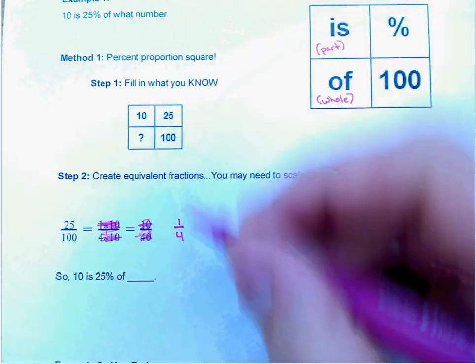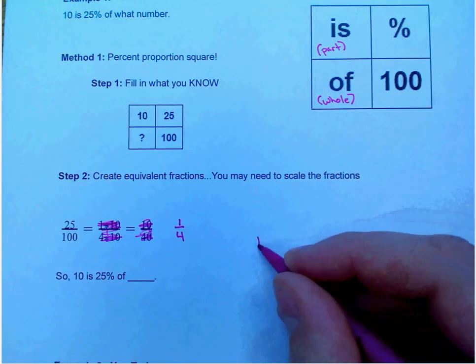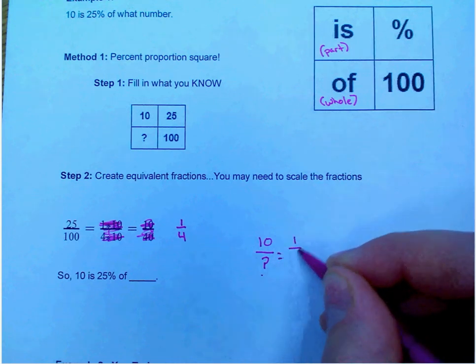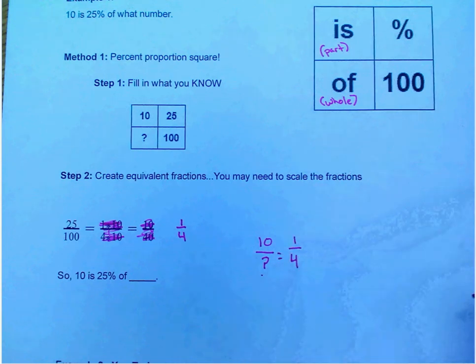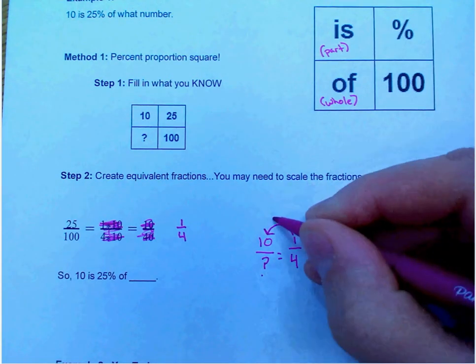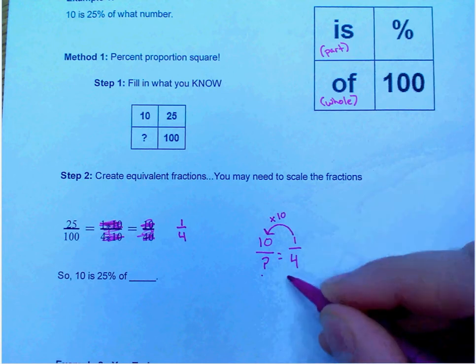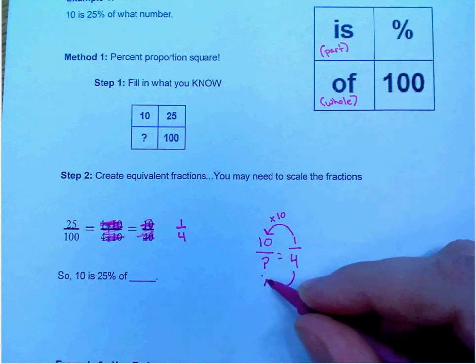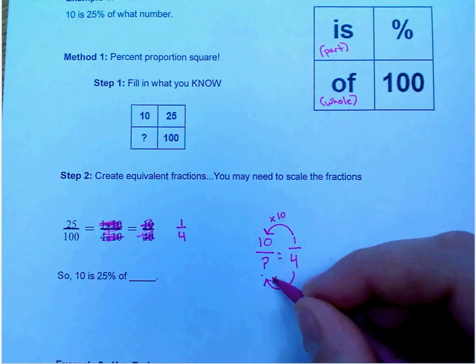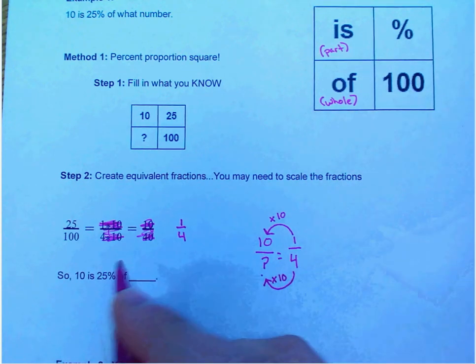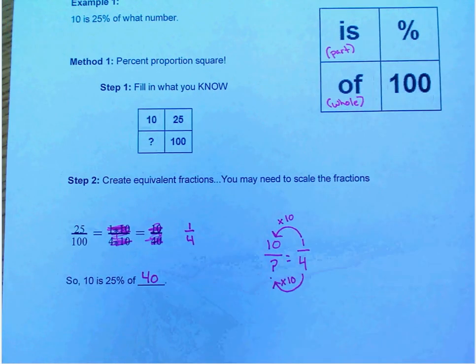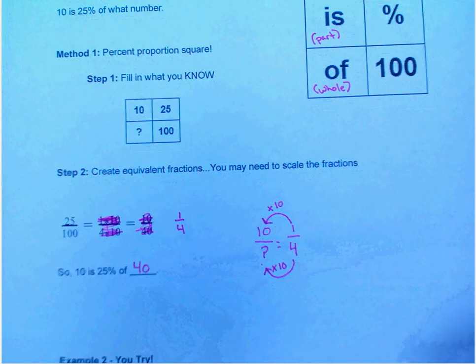So if we look at our two fractions there, I have 10 over question mark is equal to 1 over 4. So what did I multiply 1 by to get to 10? I multiplied it times 10. I have to do the same thing to the bottom because that's our phrase that pays. What you do to the top, you must do to the bottom. And we multiply times 10. So 10 is 25 percent of 40.